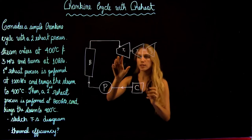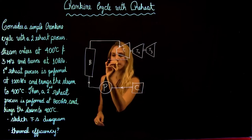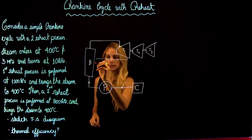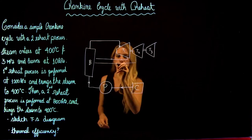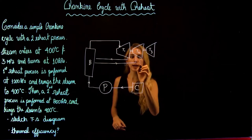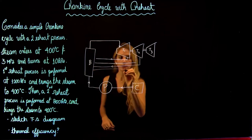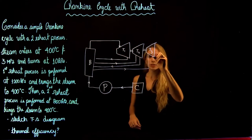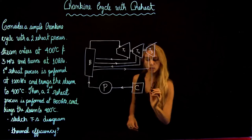In a reheat system, after the expansion of the first turbine, the steam is sent back to the boiler, where it is heated to reach the superheated state before being sent to the next turbine. This is the first reheat process. Then the steam from the second turbine goes to the boiler where the temperature increases before being sent to the third turbine. The steam then leaves the third turbine and is sent to the condenser.